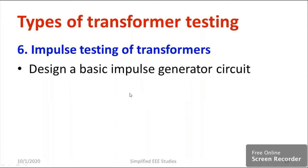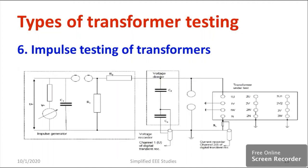To design a basic impulse generator circuit for generating chopped waveform or full wave, we definitely require an impulse generator. Let us consider a block diagram for impulse testing. The first segment belongs to the impulse generator — with charging and discharging capacitors, a spark gap, and wave front and wave tail resistors. To measure how much impulse voltage has been generated, you can use a capacitive type voltage divider.